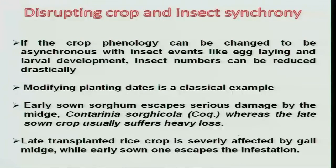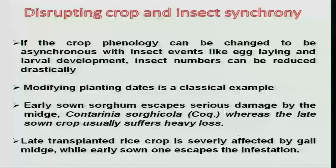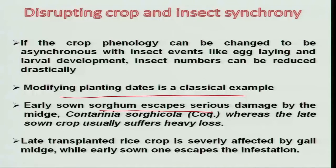Disrupting crop and insect synchrony is another important method. Each crop has a critical stage for infestation, and that stage should not coincide with the heavy insect population. If the heavy population coincides, we find more economic damage; if less population, we find low economic damage. Modifying planting dates is a classic example — in sorghum, sorghum midge incidence can be reduced drastically if the crop is sown early. Similarly, in transplanted paddy, gall midge incidence can be escaped if sowing is done early.